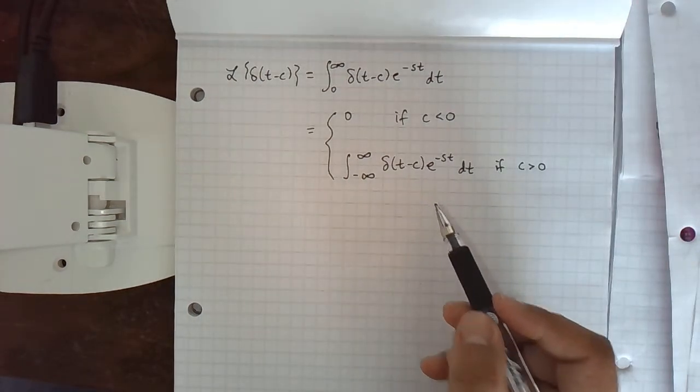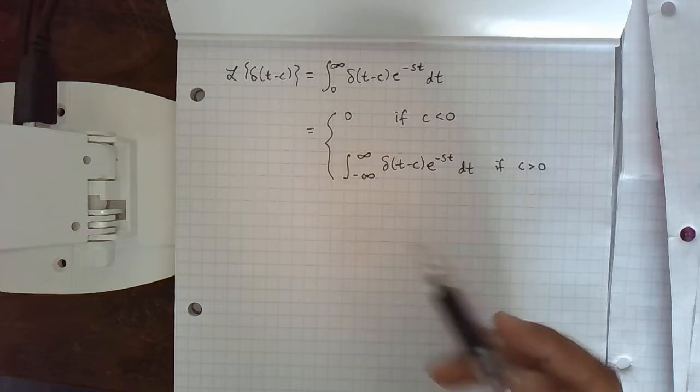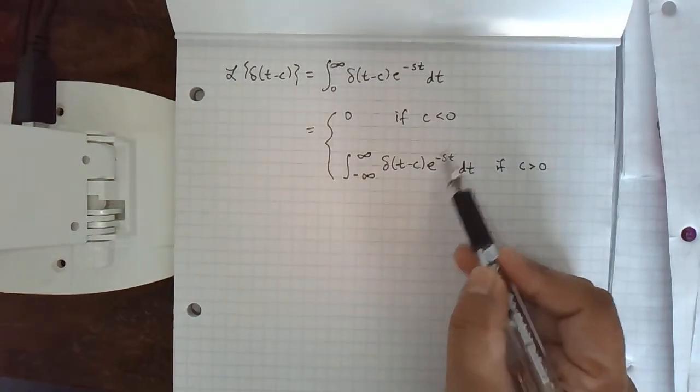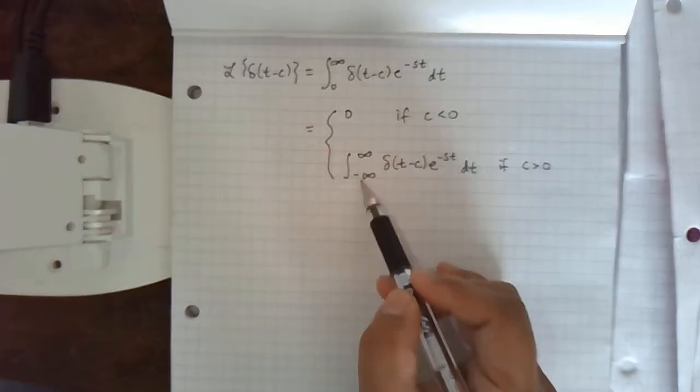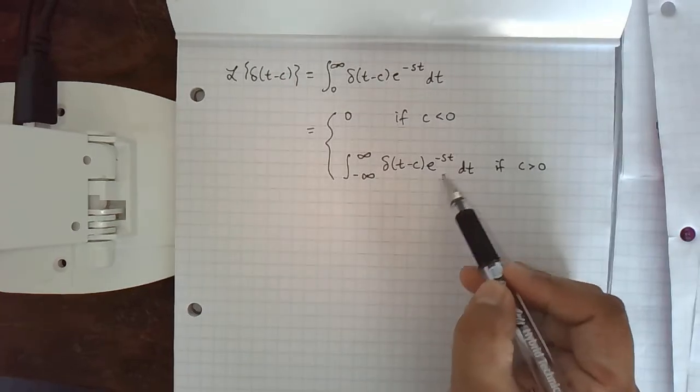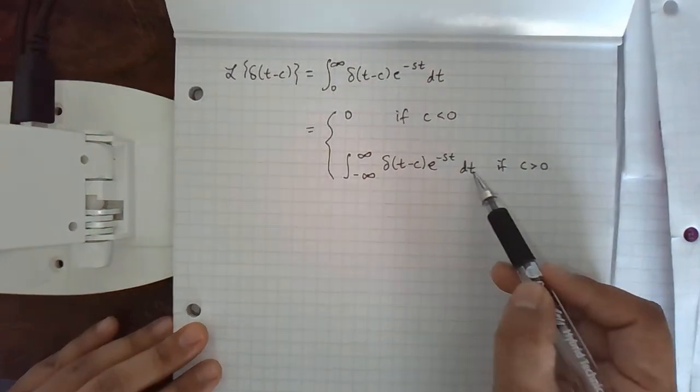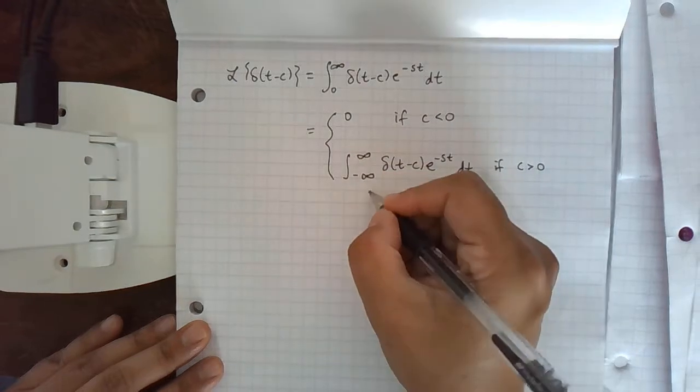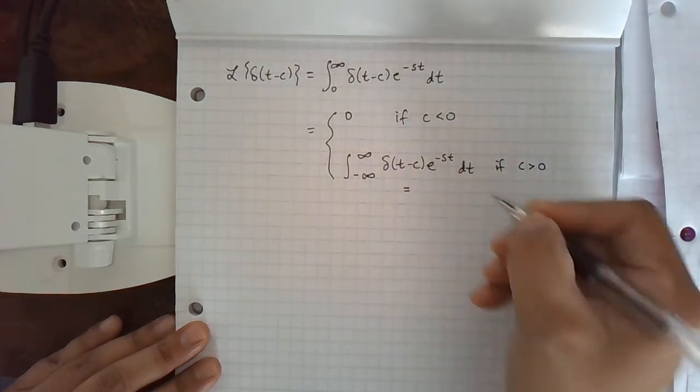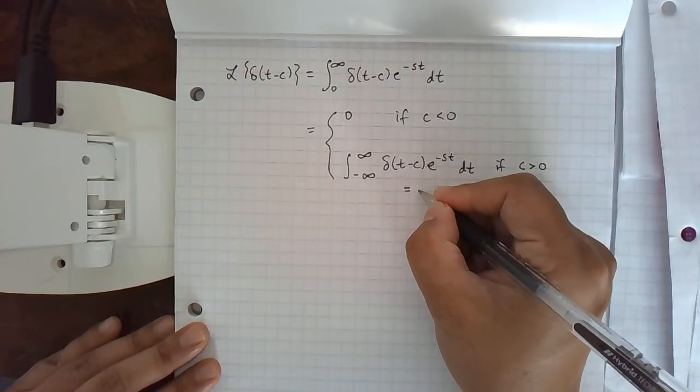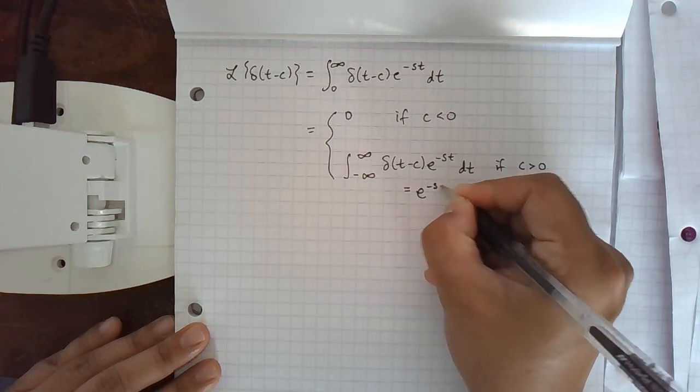But then that goes back to the property we mentioned in the last video, where if we have a Dirac delta function times another function integrated over the whole number line, it just picks out the value of the other function at c, at t equals c. T is the changing variable here, s is a constant. So then this is going to be e to the negative sc.